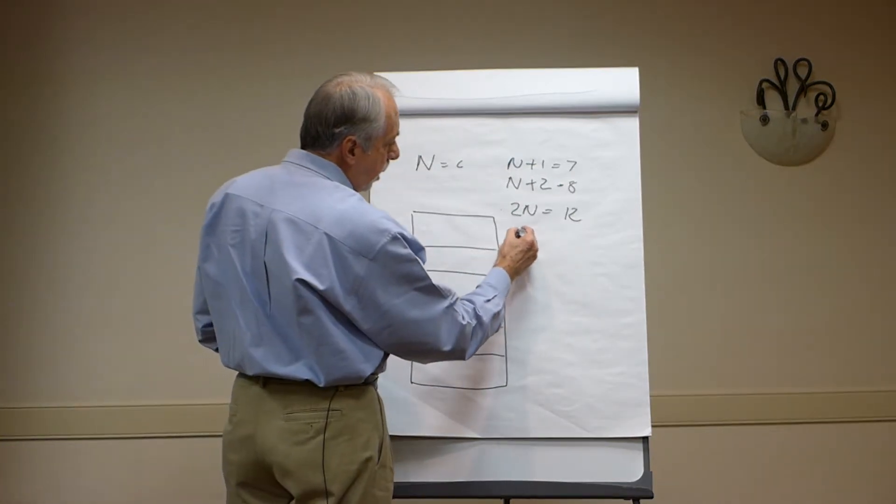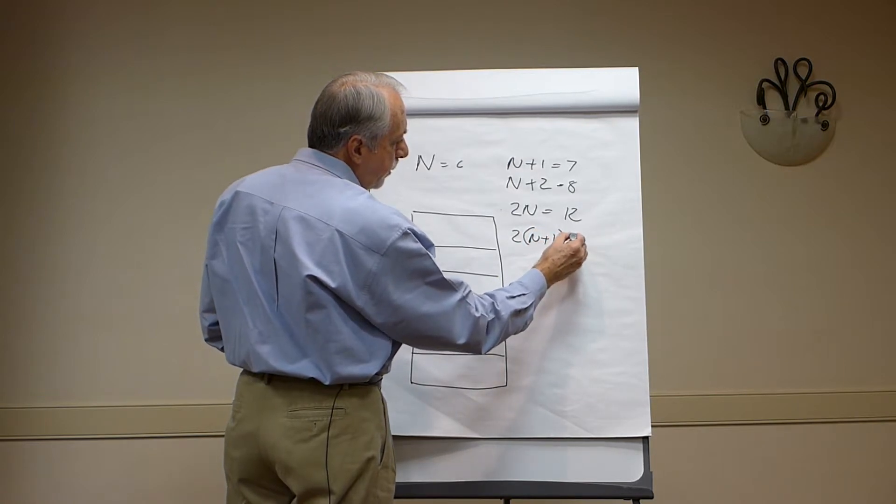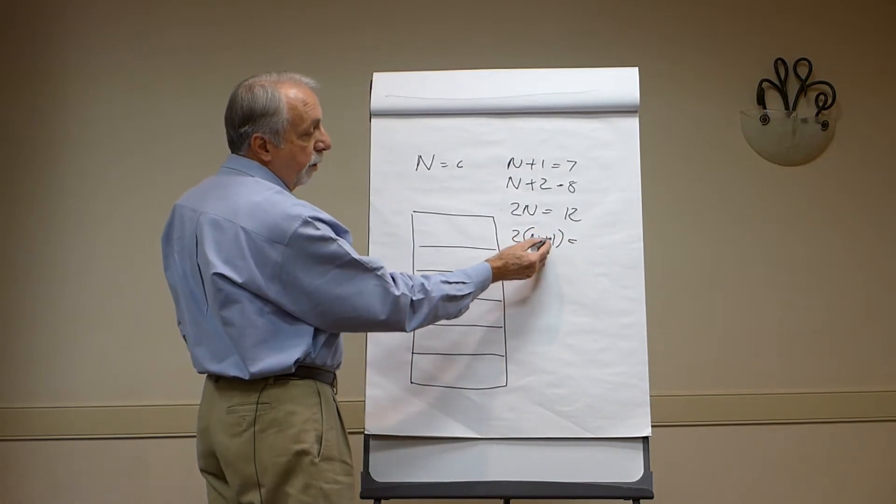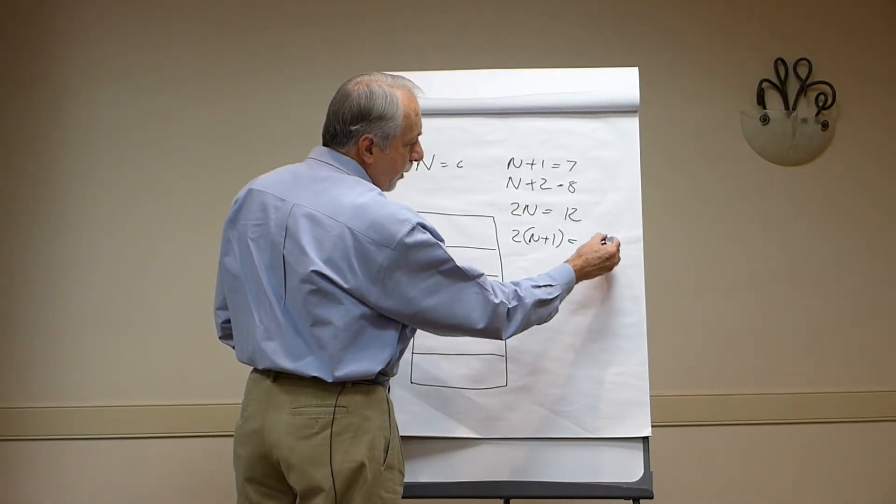Then some will go as far as going two times N plus one equals what? Well N plus one, seven. Two times that, we've got fourteen.